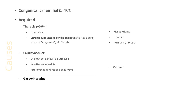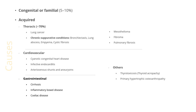Cardiovascular diseases leading to clubbing include cyanotic congenital heart diseases, infective endocarditis, and arteriovenous shunts and aneurysms. Gastrointestinal diseases include liver cirrhosis, inflammatory bowel disease, or celiac disease. Other causes include thyrotoxic causes, also known as thyroid acropachy, and primary hypertrophic osteoarthropathy.